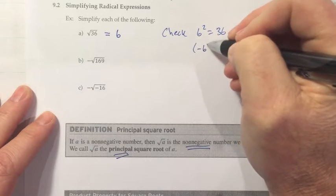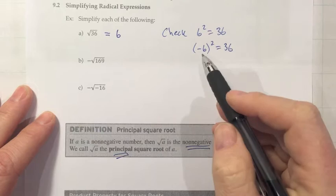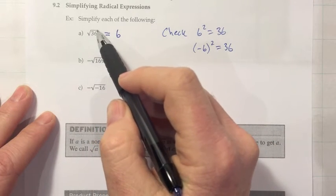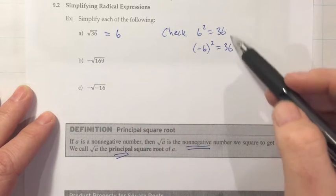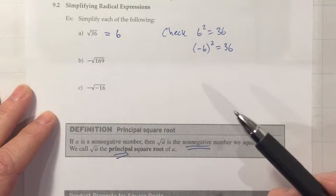But it turns out if you took negative 6 and squared it, you would also get 36. So negative 6 is the square root of 36 as well. But this symbol, the principal square root, means we want the positive answer, the positive number that if you square it, you get 36. So when you see that symbol, you would never give the negative answer.